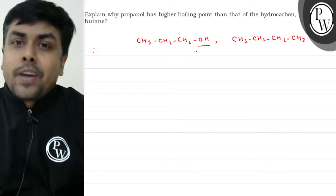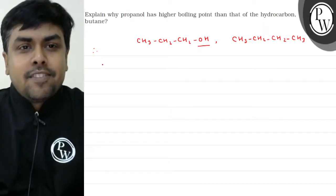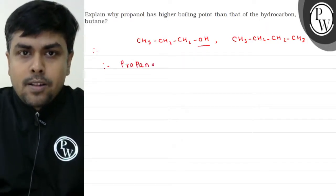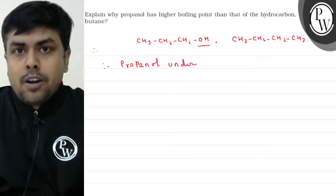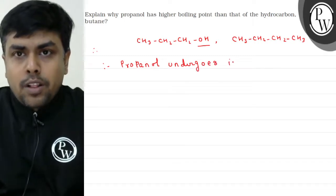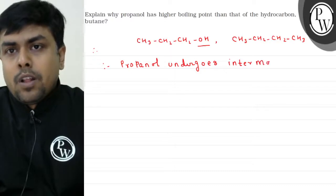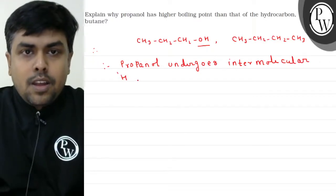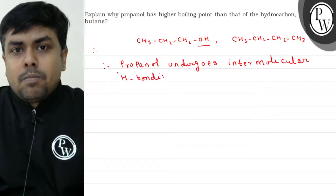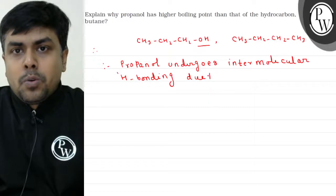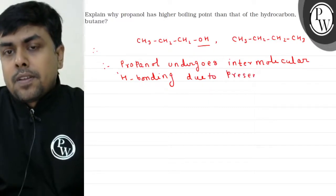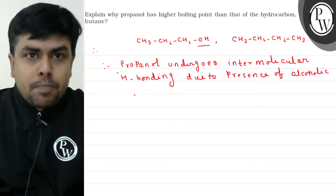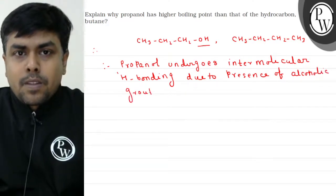In propanol, ek alcoholic group present hai, and due to this alcoholic group, propanol undergoes intermolecular hydrogen bonding. Is alcoholic group ki wajah se intermolecular hydrogen bonding ho sakti hai.